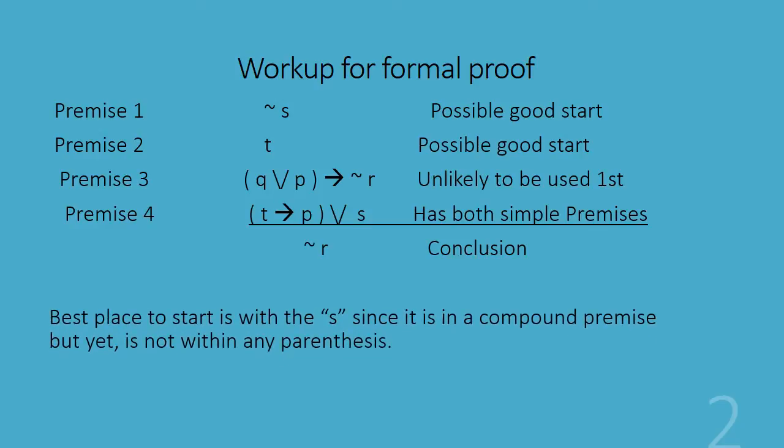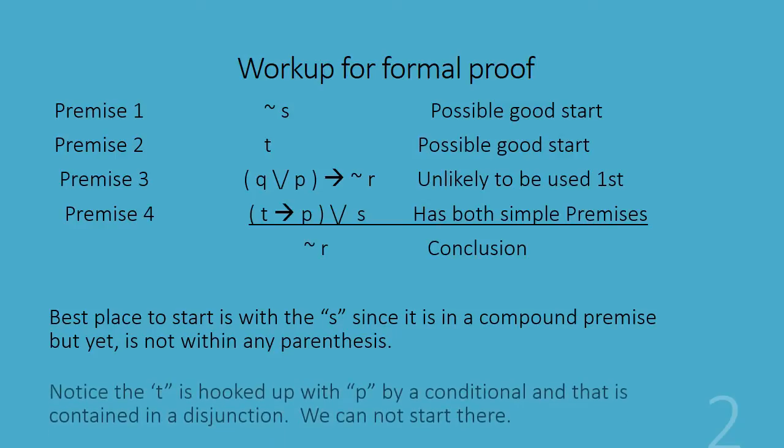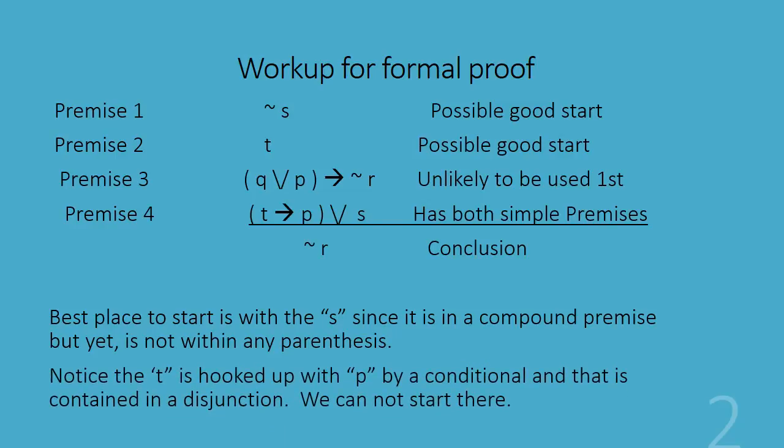We'll see that the best place to start is with s or not s since it's in the compound premise, this fourth one, but yet is not within any parentheses. It just sort of sticks out by itself so it can sort of be picked off. Notice the t in that fourth premise is hooked up with the p by a conditional statement and that's contained in a disjunction, so we can't get to that t easily.